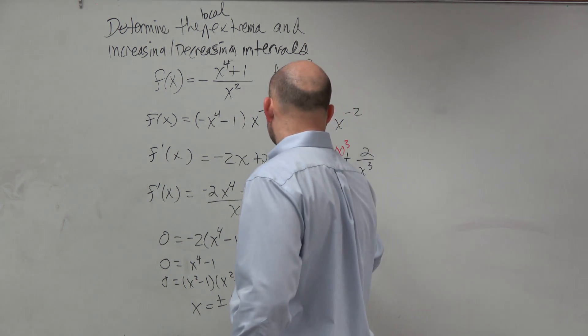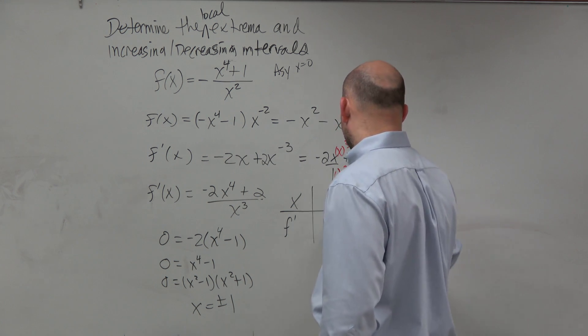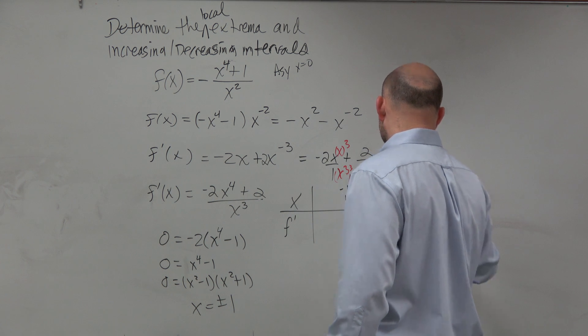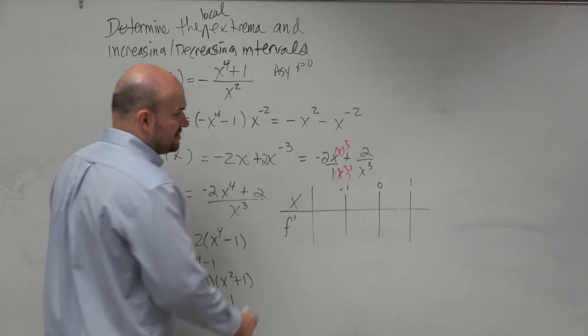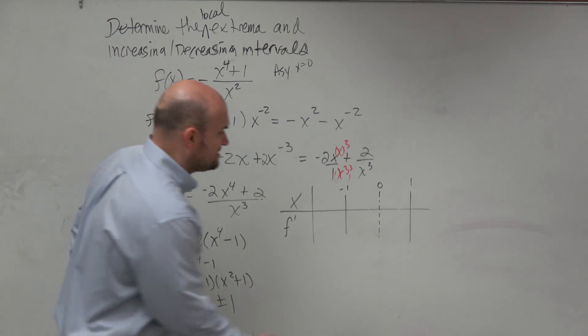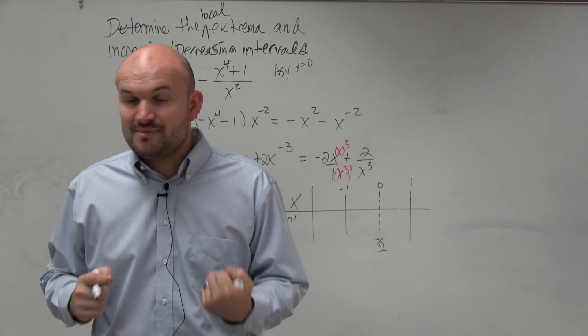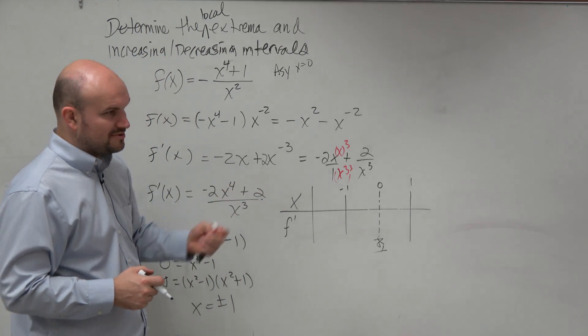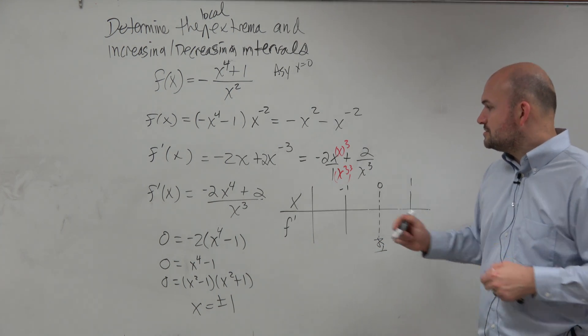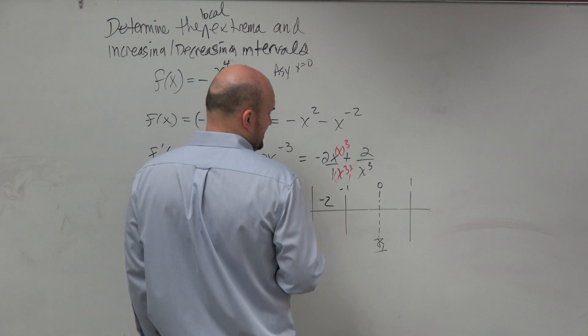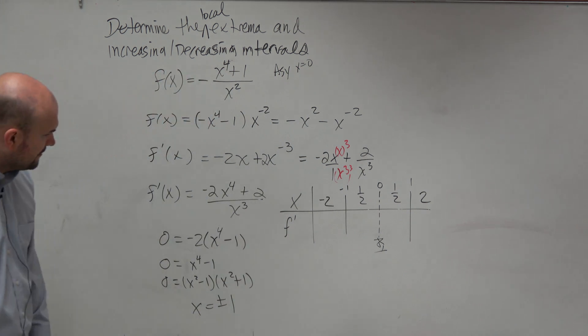So we go into our table, x and f prime. So we have our testing intervals, which are at negative 1, 0, and at 1. Why are we including 0? It is a critical value. It's just not in the domain. So let's go and pick a point to the left of negative 1. Let's pick negative 2. Between negative 1 and 0, let's just pick negative 1 half. Between 0 and 1, let's just pick 1 half. Greater than 1, let's just pick 2.